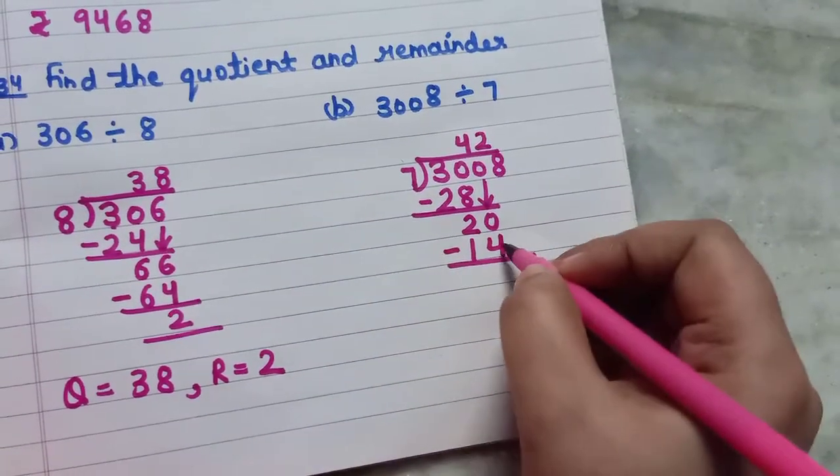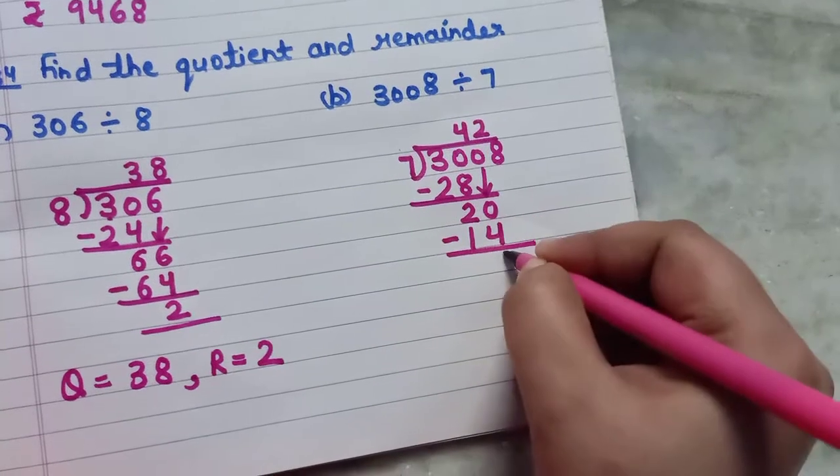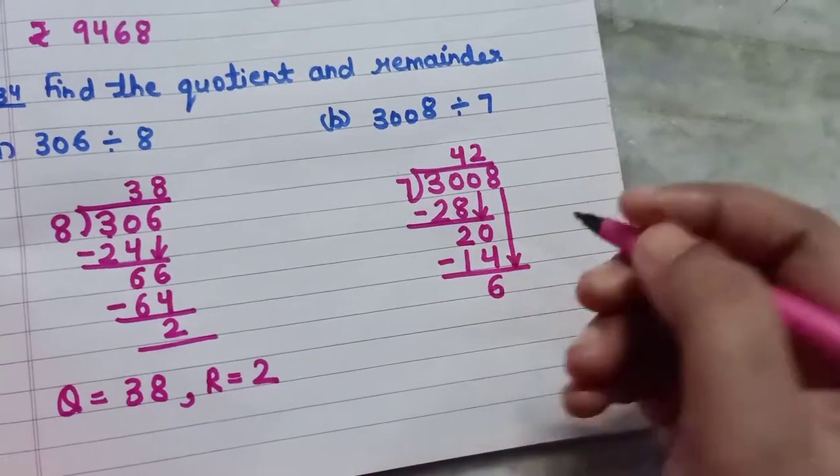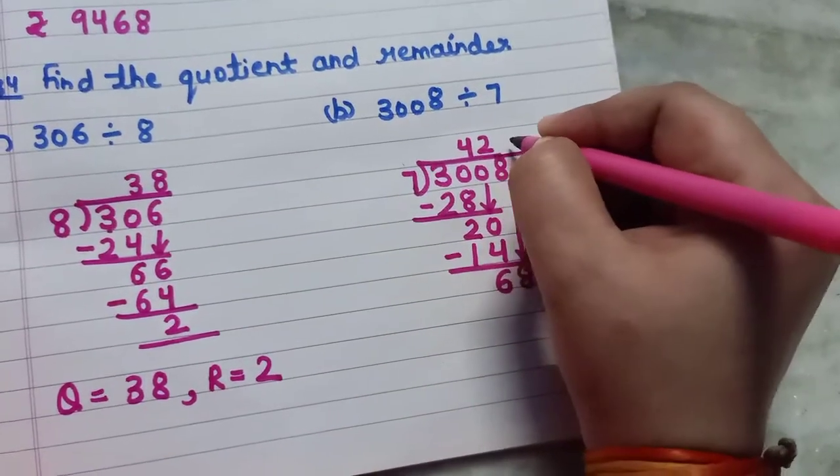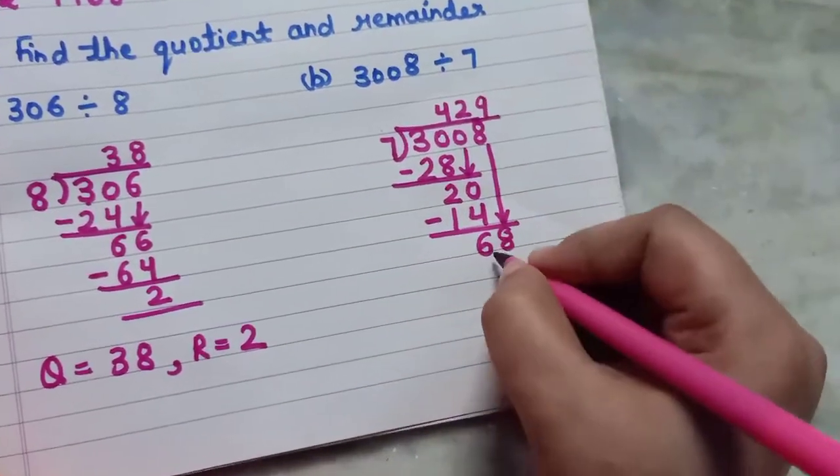Again subtract them. 20 minus 14 will be equal to 6. Now copy down the last digit, that is 8. Again check. 7 nines are 63.